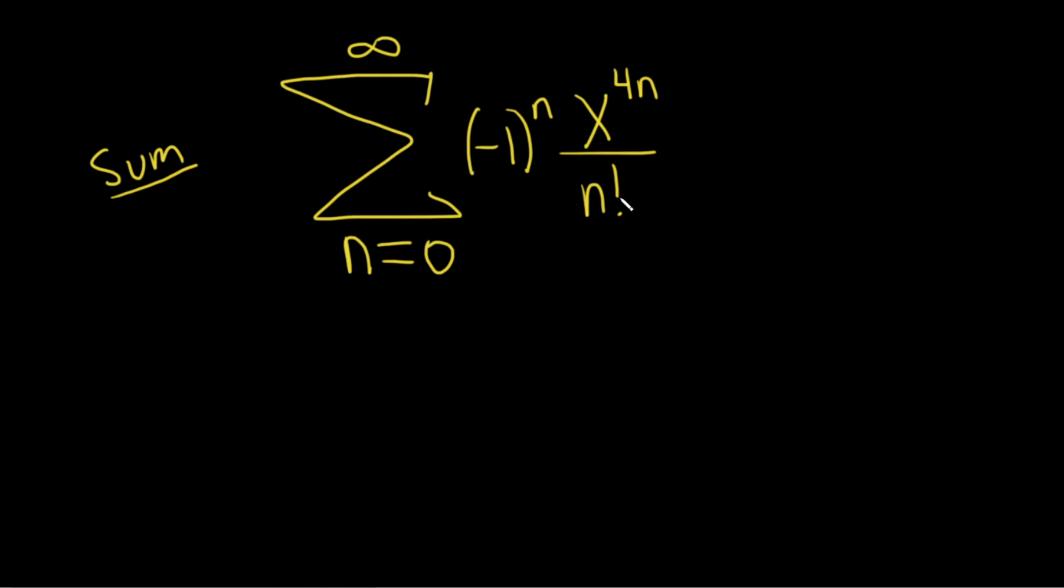So because we have an n factorial here, I'm thinking about e to the x. Recall that e to the x is equal to the infinite sum as n runs from 0 to infinity of x to the n divided by n factorial. And this converges for all x.